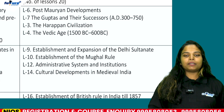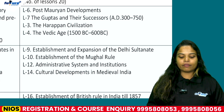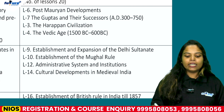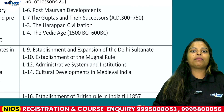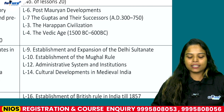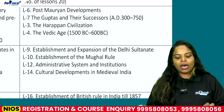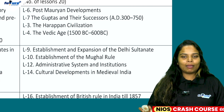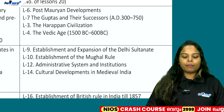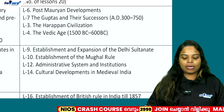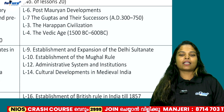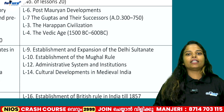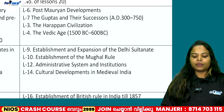The third chapter is The Harappan Civilization. The fourth chapter is The Vedic Age. The fifth chapter is Post-Maurian Developments. The seventh and sixth chapter is the Gupta and the Successors.